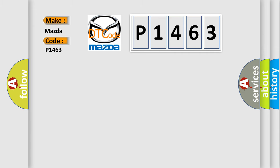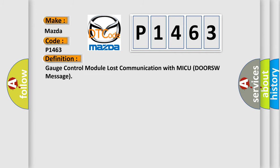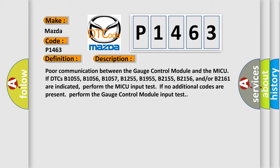The basic definition is: Gauge control module lost communication with MICU DRSW message. This is a short description of this DTC code: poor communication between the gauge control module and the MICU if DTCs B1055, B1056, B1057, B1255, B1955, B2155, B2156, and/or B2161 are indicated.